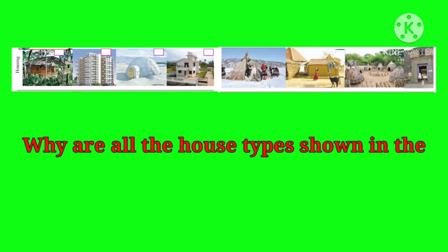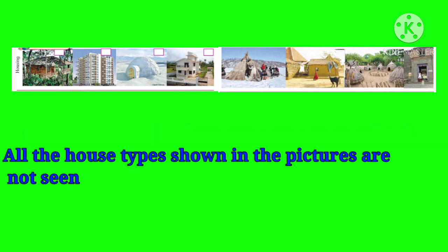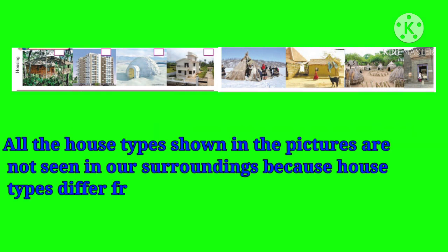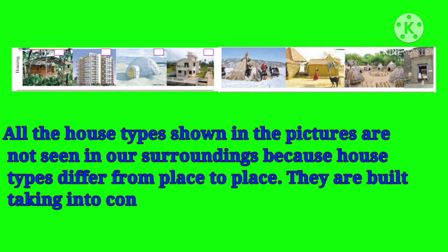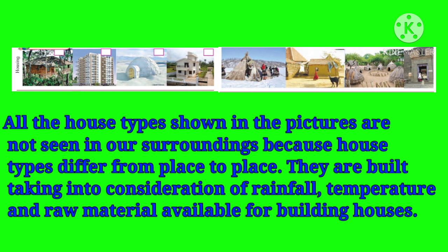Let's see the first question: Why are all the house types shown in the pictures not seen in our surroundings? All the house types shown in the pictures are not seen in our surroundings because house types differ from place to place. They are built taking into consideration rainfall, temperature, and raw material available for building houses.